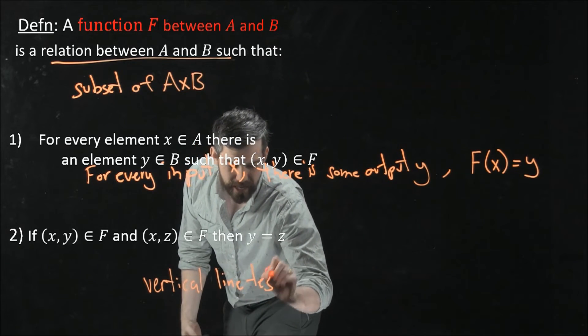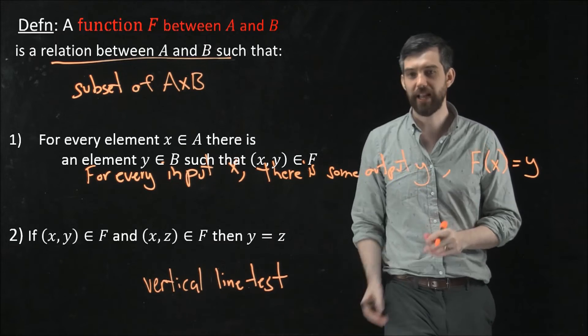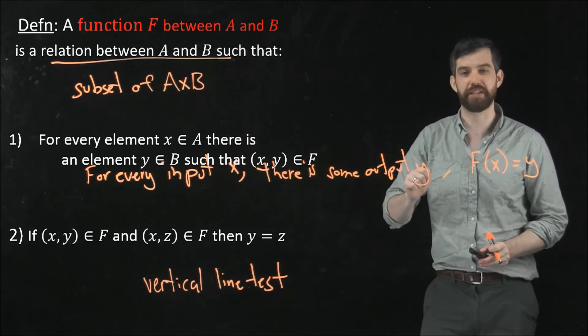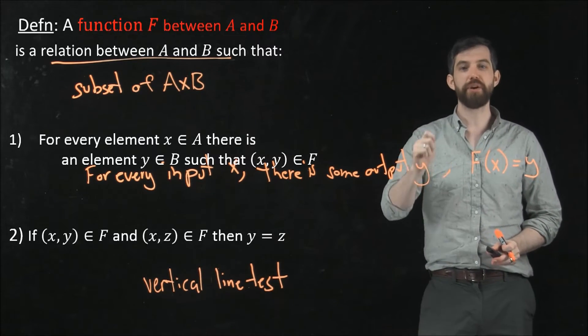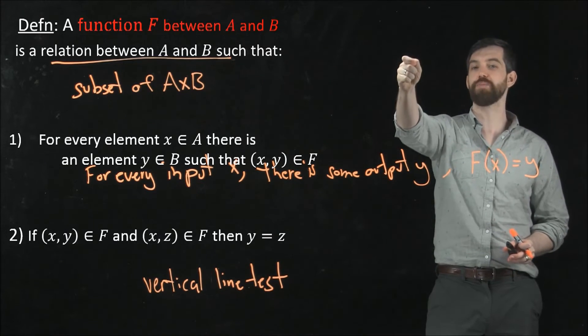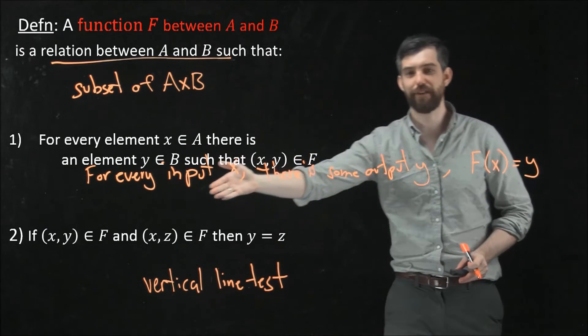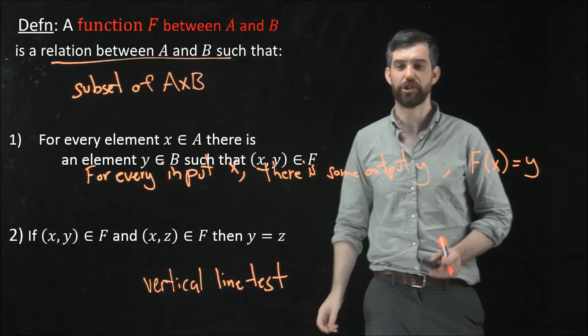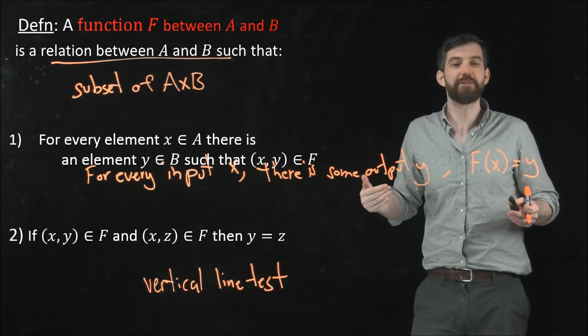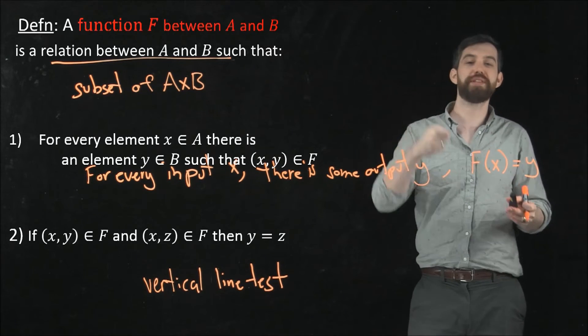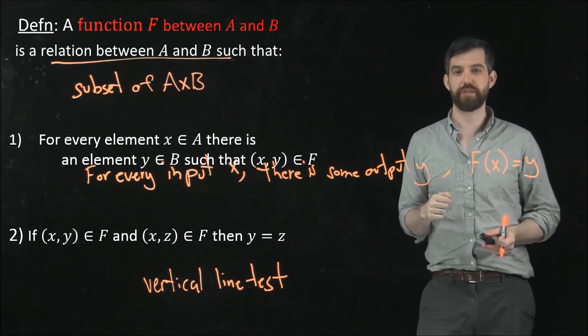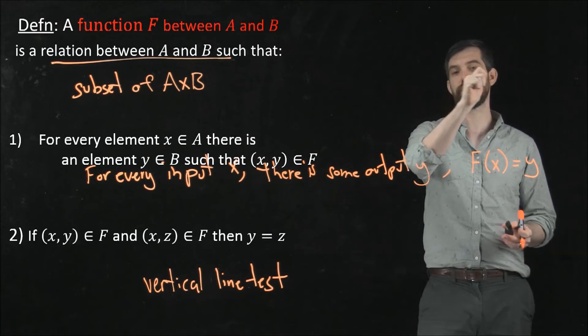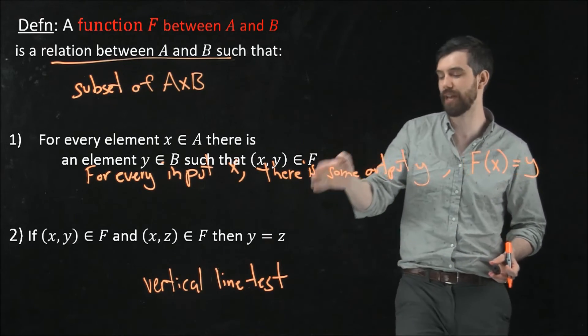It's that second property that we were demanding, which says that if you have one input, that's the x here, if you have one input, then there is only one possible output. And so in this case, if I told you that I had two different ones that were both in this function, two different ordered pairs, then it must be that really they are the same one. Their first components are the same, and it must also be the case that their second components are the same, because there really can only be one.